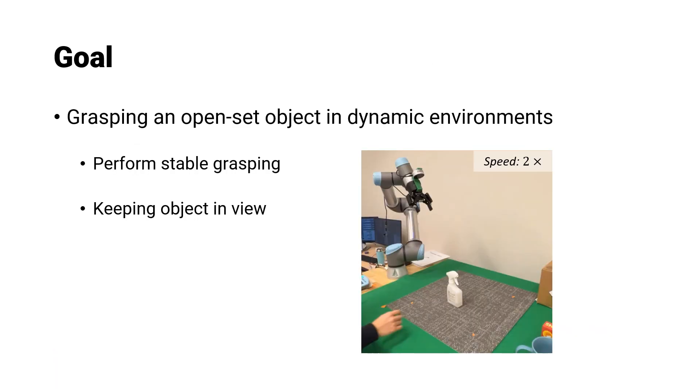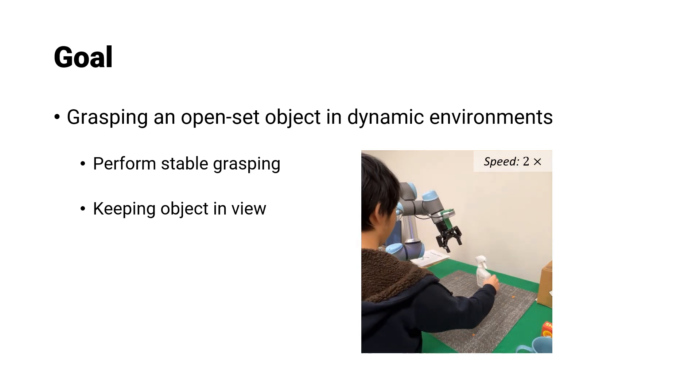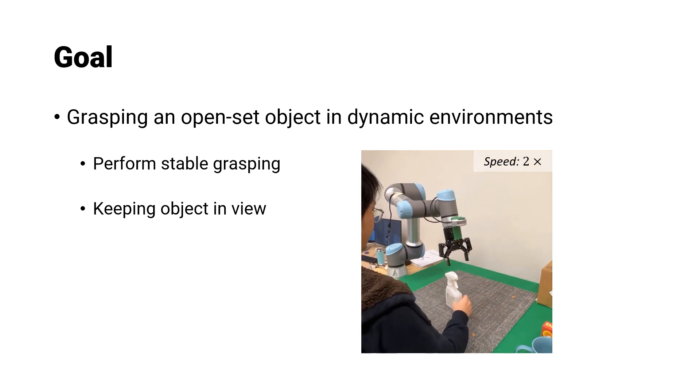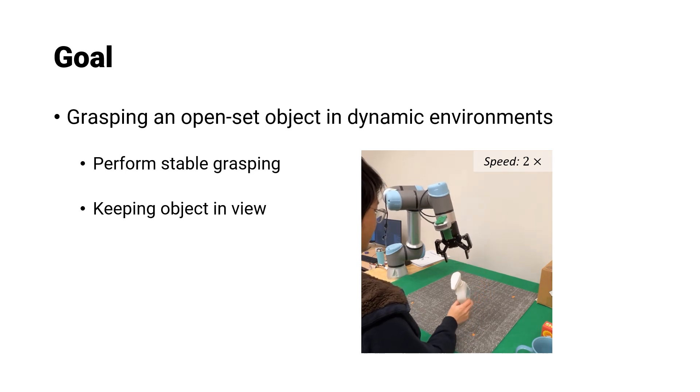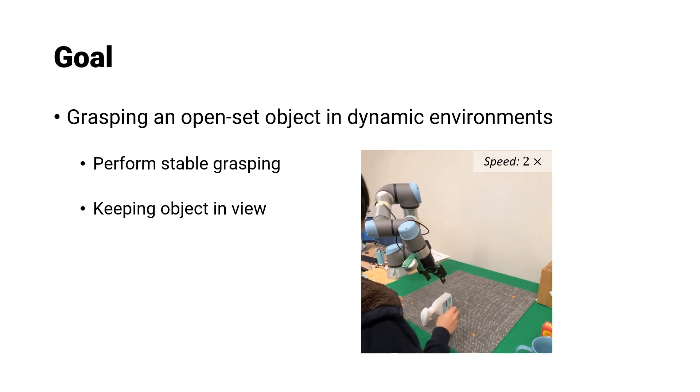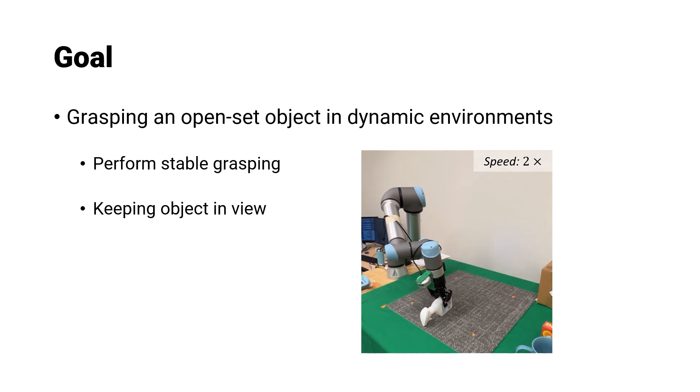The objective of this research is to facilitate robotic grasping of an open-set object within a dynamic environment. Here, the object is characterized by its ability to move freely in a 6 degree of freedom space and may be subjected to partial occlusion.